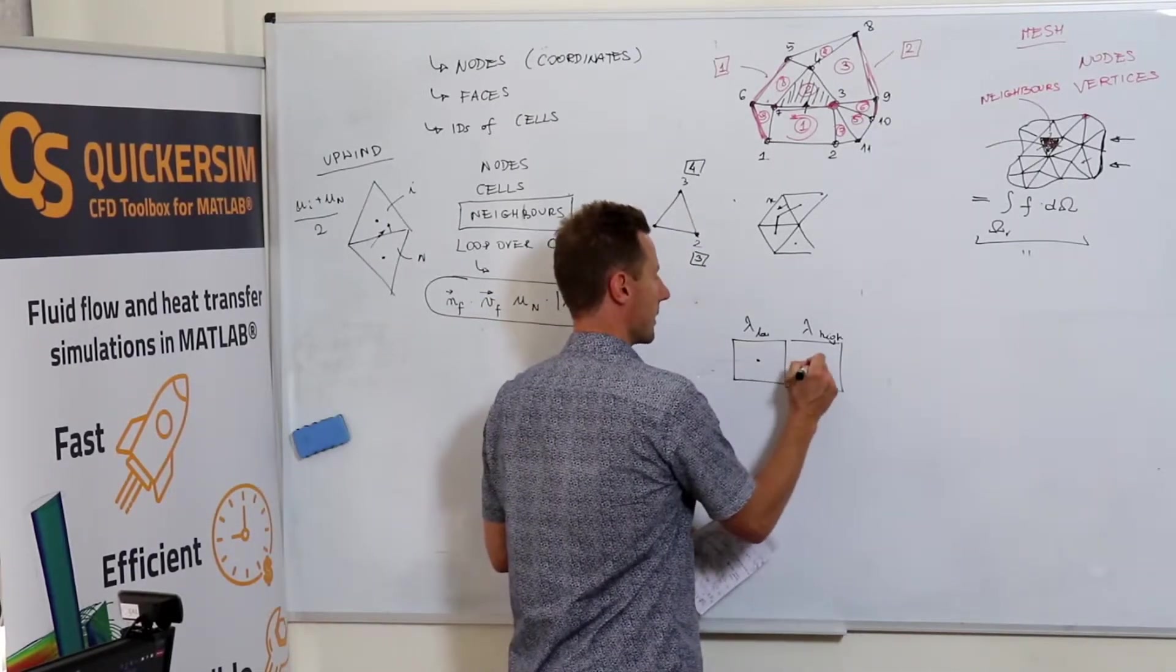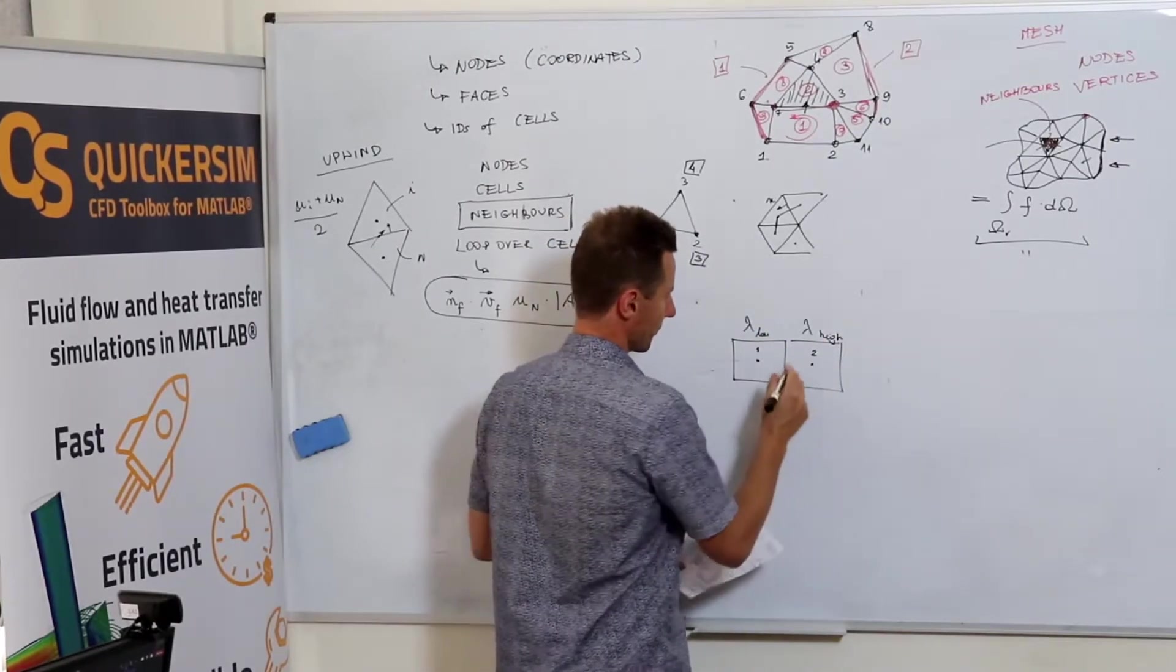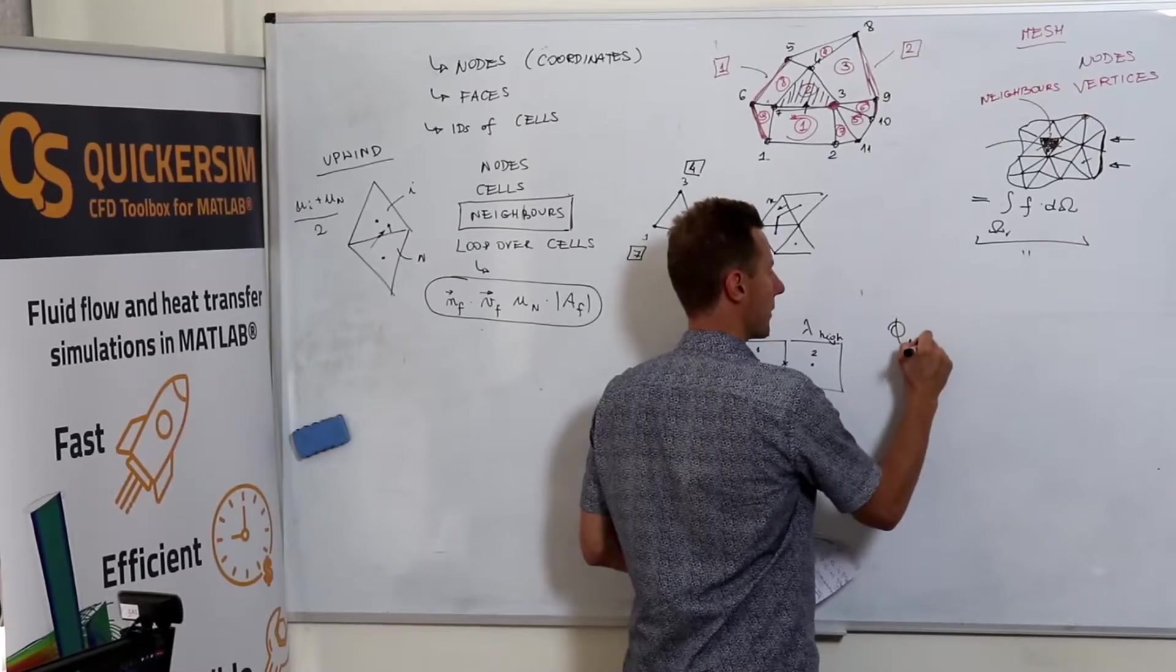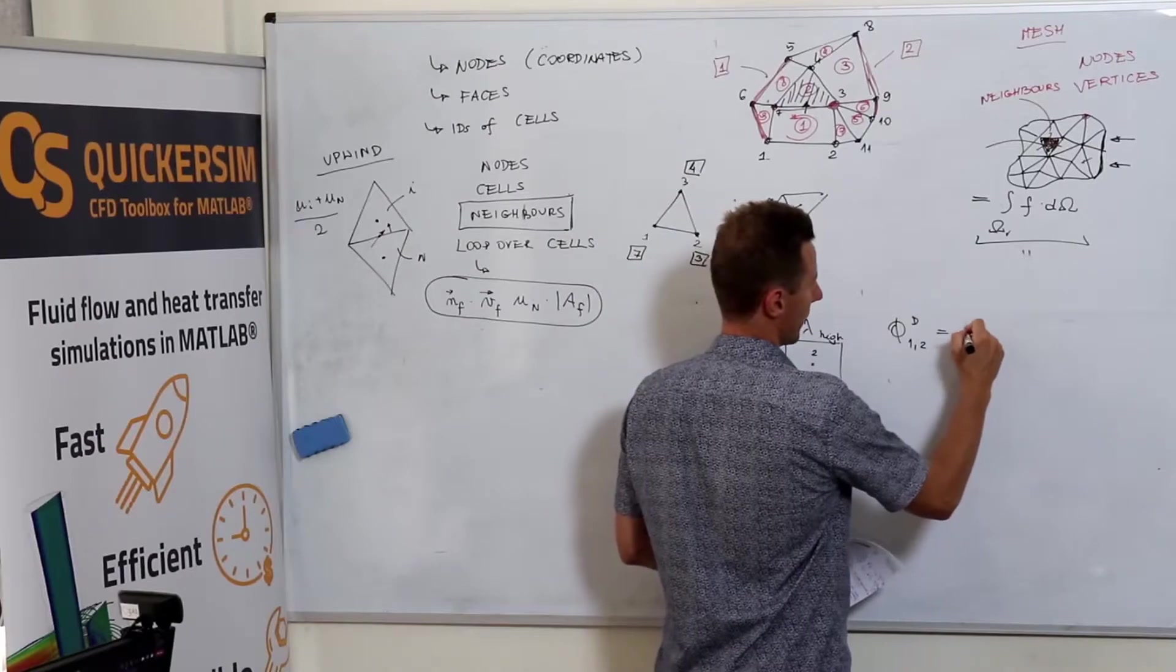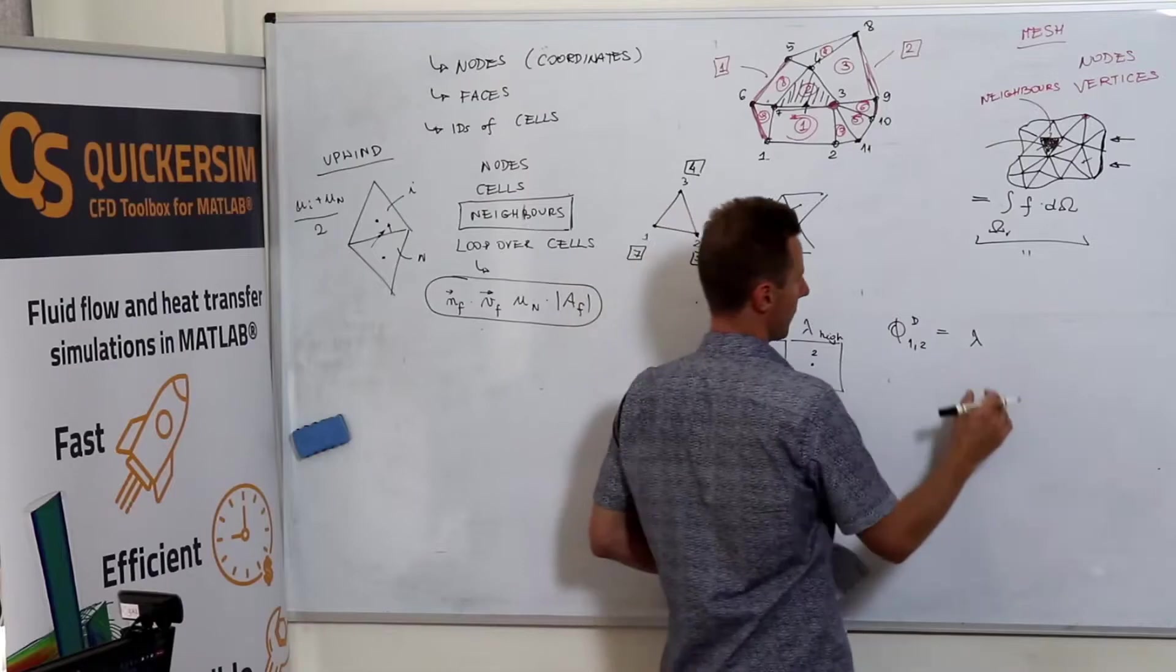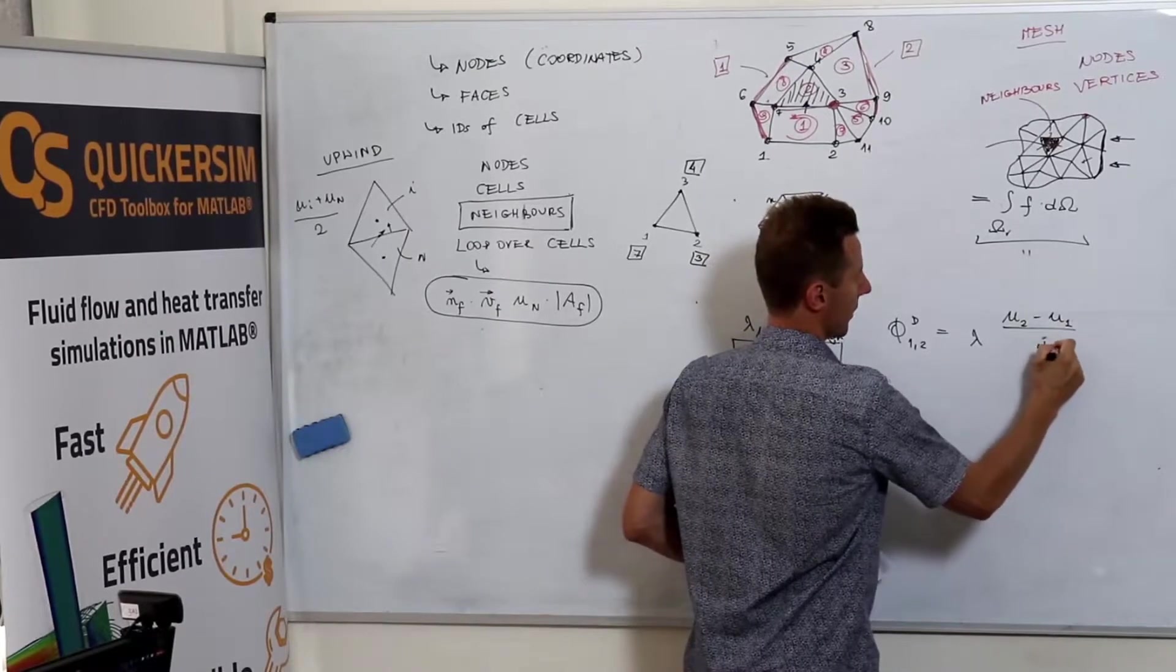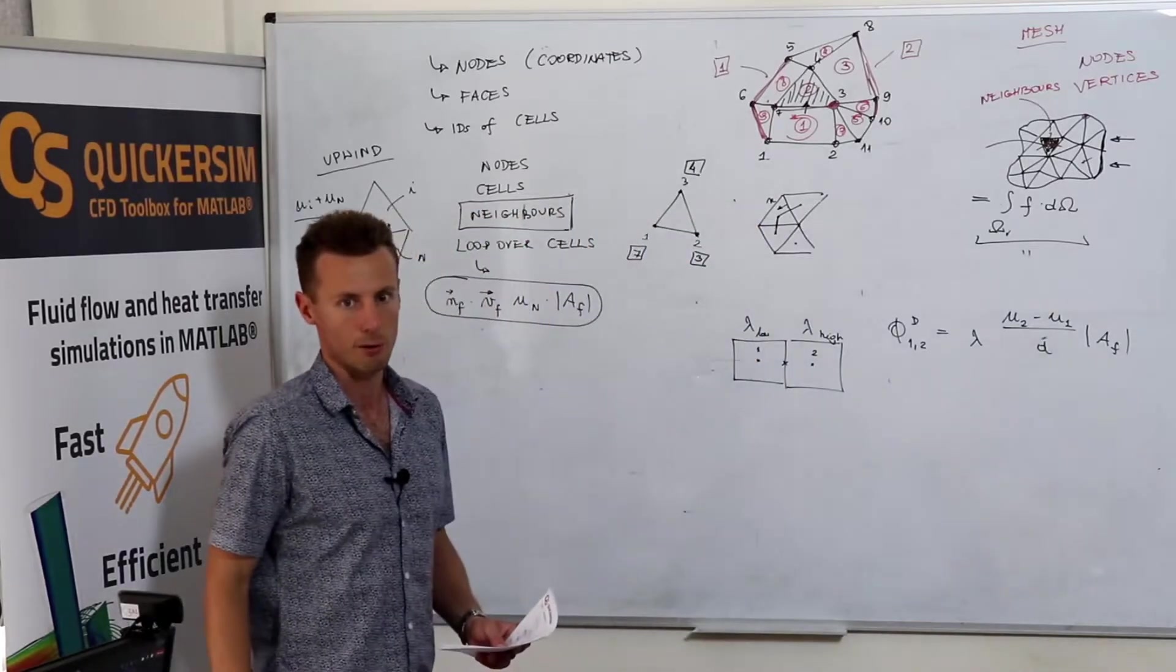So, okay, let's have the centroids once again. And we said that how would you calculate the diffusive flux between one and two? Well, generally, for constant lambda, you would do lambda times u2 minus u1 divided by distance multiplied by surface area of the face.